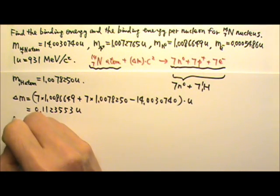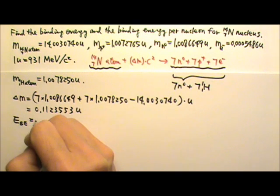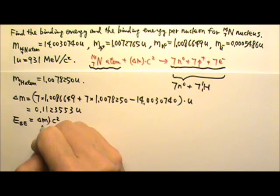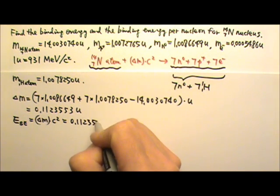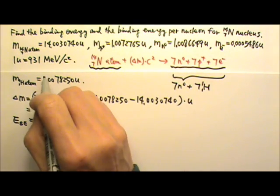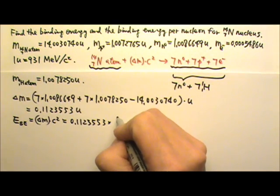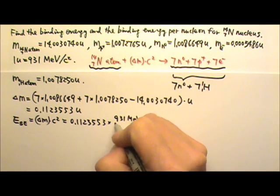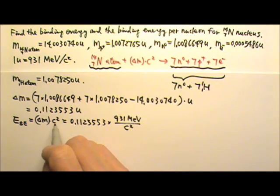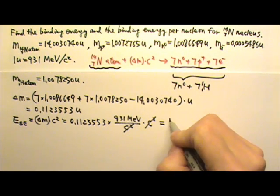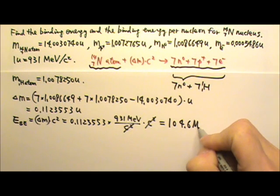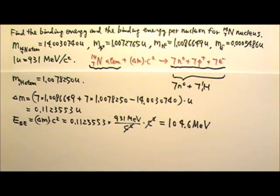Therefore, the total binding energy would be the delta M times c squared. Now the delta M is 0.1123553U, which is 931 mega eV over c squared. So if I multiply this by c squared, the c squared would cancel. So this will give me also 104.6 mega eVs. And then, of course, we divide by 14, we can get the binding energy per nucleon.